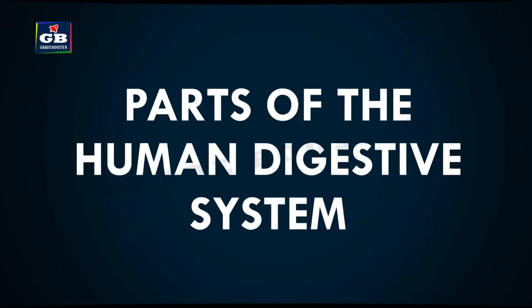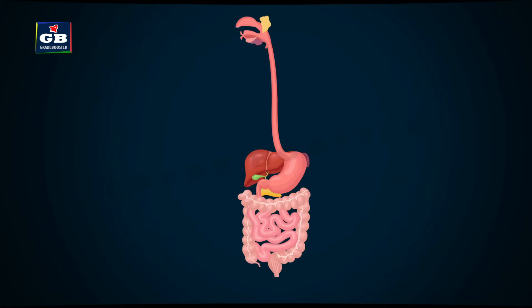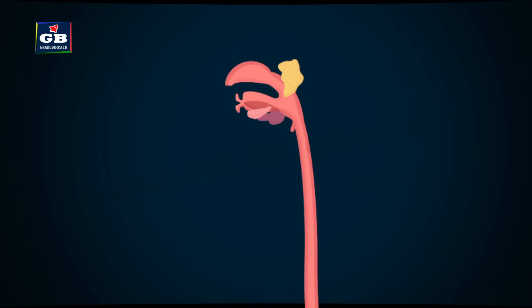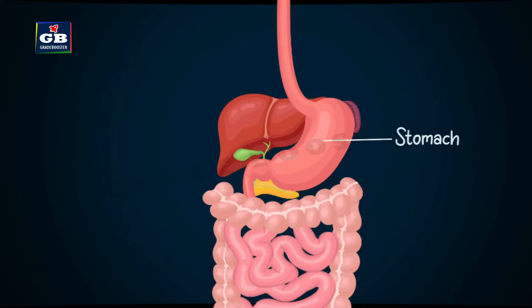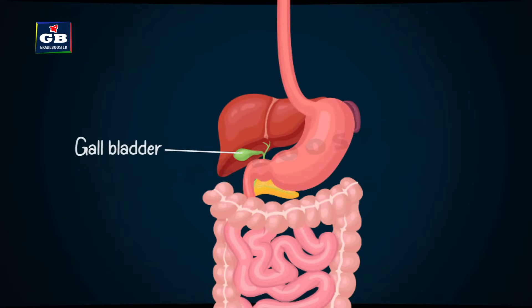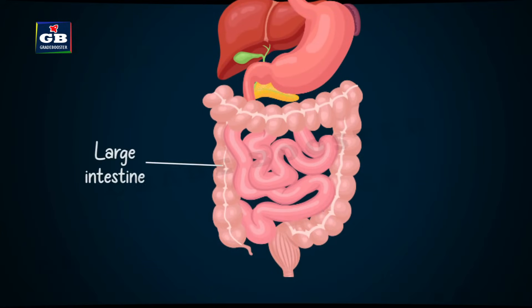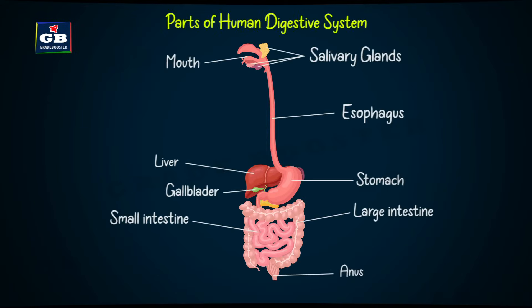Parts of the human digestive system. This is our digestive system. This is the mouth. These are salivary glands. This is the esophagus, stomach, liver, pancreas, gallbladder, small intestine, large intestine, and anus. These are the parts of our digestive system.